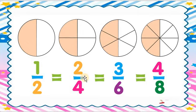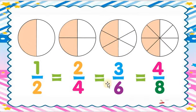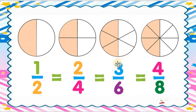Figure number three: how many parts in the whole circle? One, two, three, four, five, six — total six parts. That's why we write six in the denominator. How many parts are shaded? One, two, three — three parts are shaded. So we write three in the numerator, giving us three upon six.